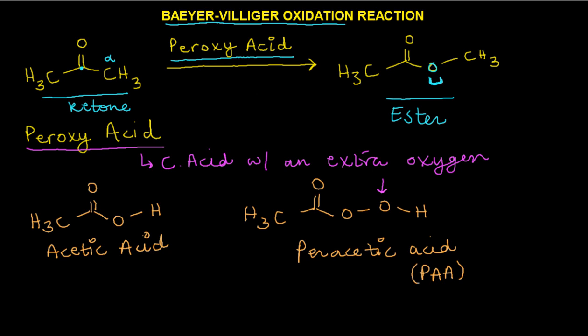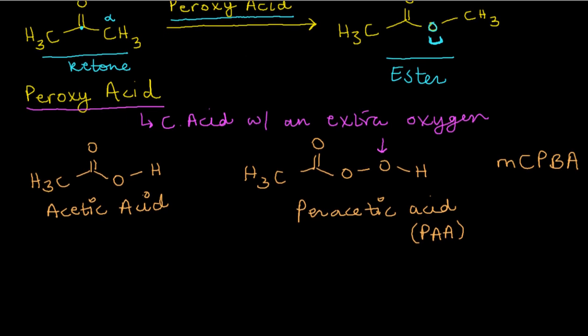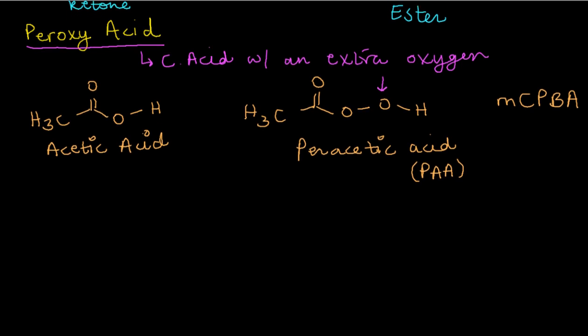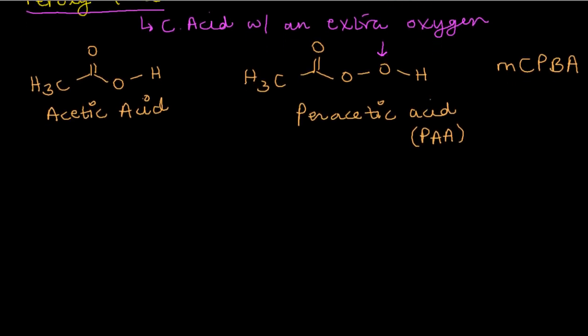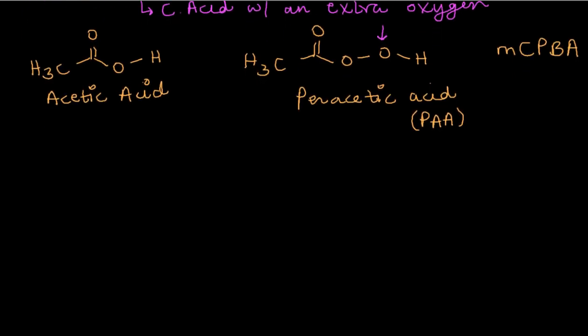There are many forms of peroxyacid. PAA being one of them. MCPBA might be another common example you might find. There's certainly a lot of peroxyacids that one can use in this reaction. Now that we know what peroxyacids are, let's move on to see the mechanism of the Baeyer-Villiger reaction and understand how we really insert that extra oxygen to form an ester.